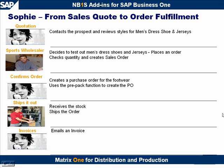In this demonstration of Matrix 1, we're going to show how the Matrix can be used in the sales process from the sales quote to order fulfillment. Sophie, our sales rep, has had contact with a customer and wants to review the styles available for men's dress shoes and teen jerseys. The customer decides to test out the jerseys and dress shoes and places an order, at which time Sophie places the order into the system, checking the quantity available on hand. She then creates a purchase order for the footwear using the prepack function. Once the stock is received, the order is shipped out to the customer and Sophie sends an email with their invoice.